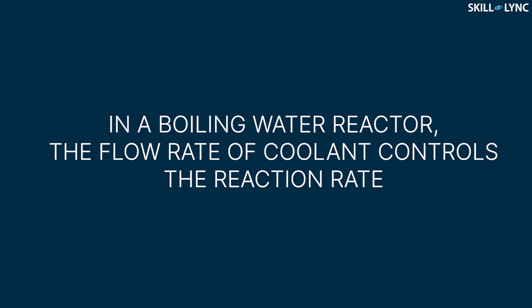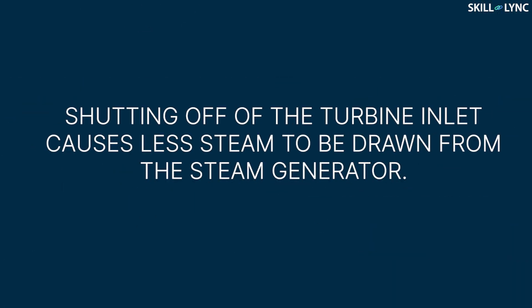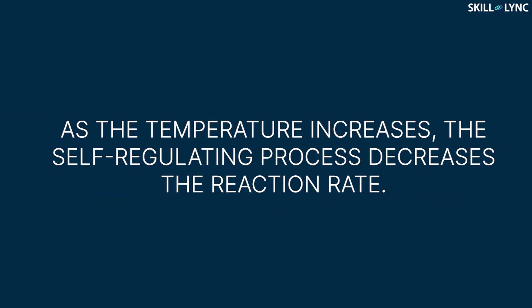Moving on to reaction control — we have seen that a boiling water reactor controls the reaction by adjusting the flow rate of the coolant. But in a pressurized water reactor, the negative temperature coefficient helps in controlling the reaction rate. To decrease power, the inlet of the turbine is shut off. This causes less steam to be drawn from the steam generator. As a result, the temperature of the primary loop increases and the power output decreases. Thus, the self-regulating process causes the temperature to return to normal.